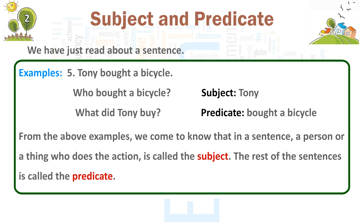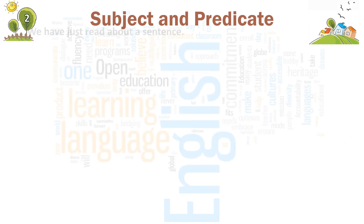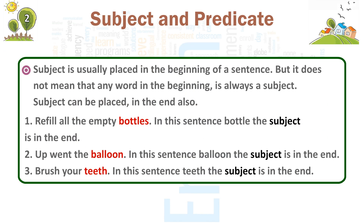From the above examples, we come to know that in a sentence, a person or a thing who does the action is called the subject. The rest of the sentence is called the predicate. The subject is usually placed at the beginning of a sentence, but it does not mean that any word at the beginning is always a subject. The subject can be placed at the end also.